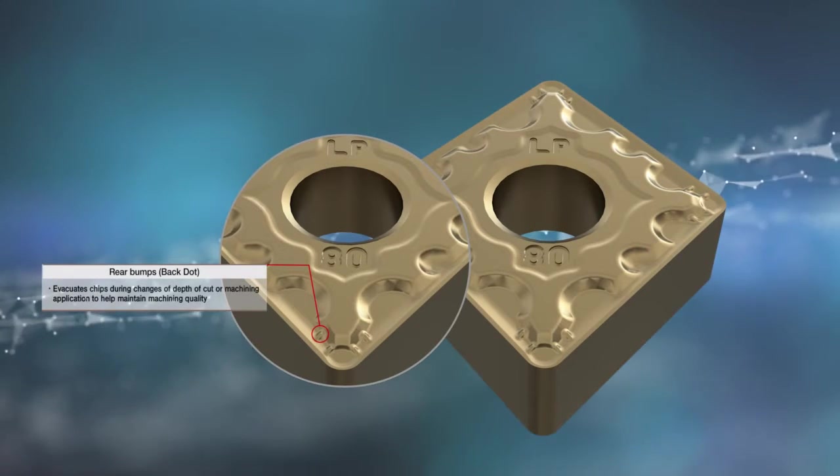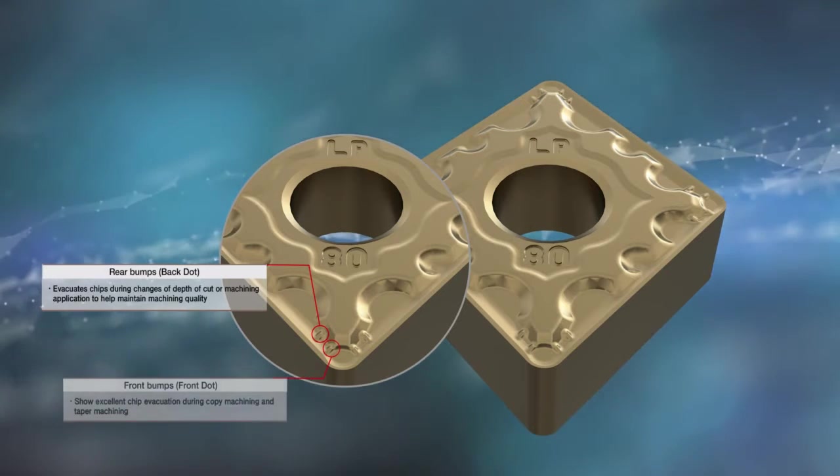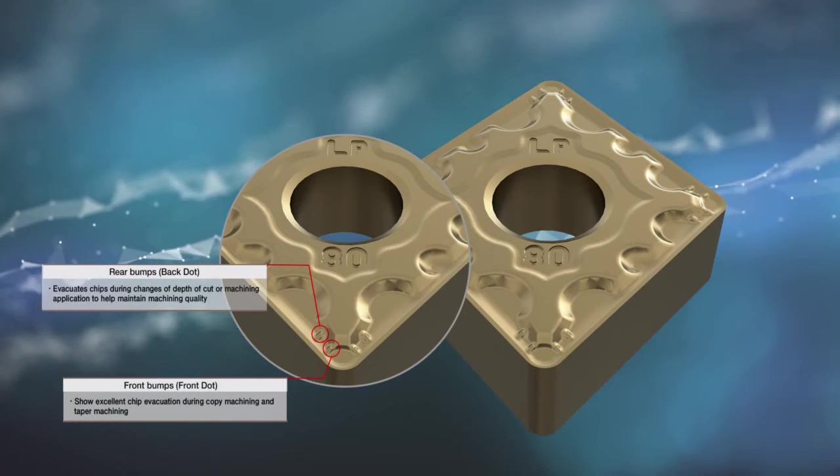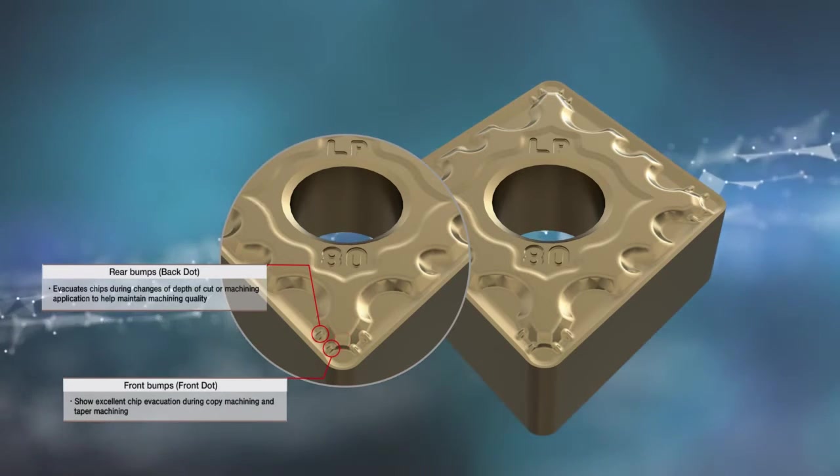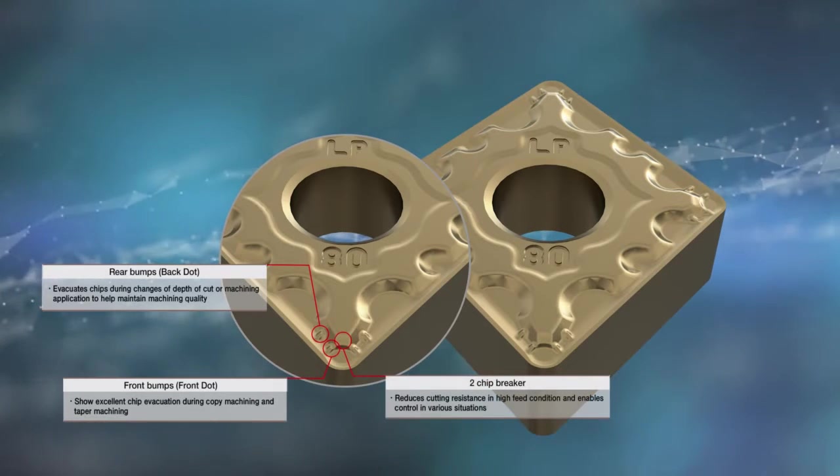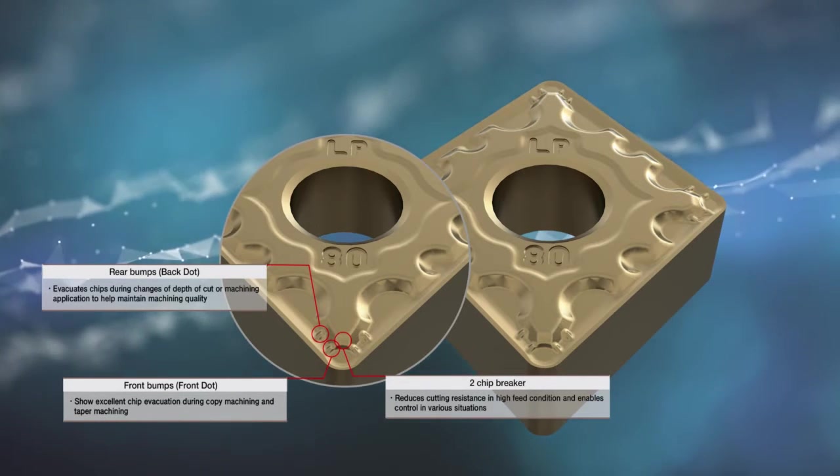The four protrusions provide excellent chip control during copying and taper machining. The dual chip breaker design reduces cutting resistance in high-feed environments and enables control in a variety of areas.